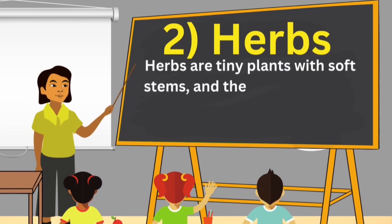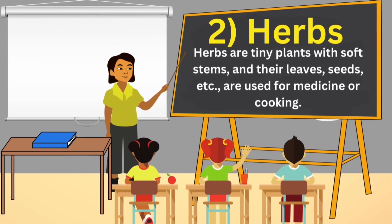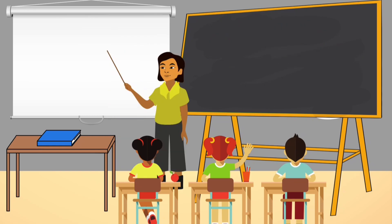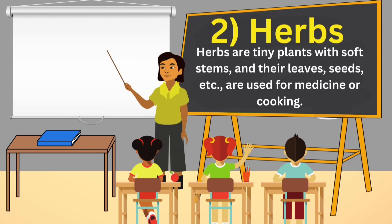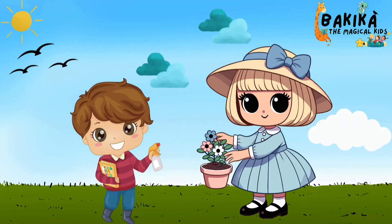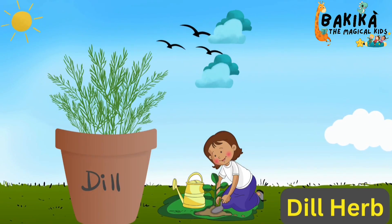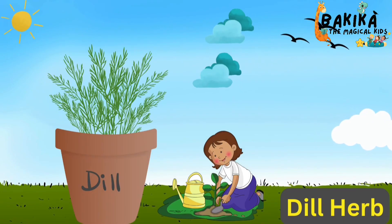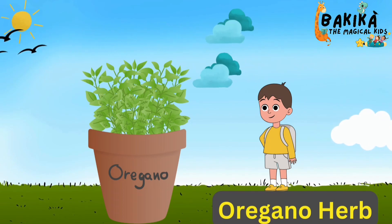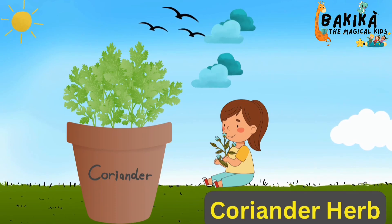Herbs are tiny plants with soft stems, and their leaves, seeds, etc. are used for medicine or cooking. This is a dill plant. This is an oregano plant. This is a coriander plant.